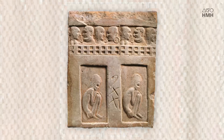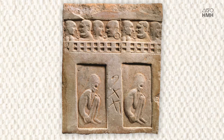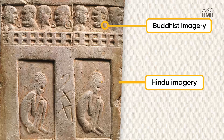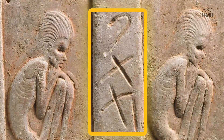Take a look at this ceramic tile. It's from a Hindu temple about 1500 years ago. The temple was originally a Buddhist shrine, which leads to an unusual pairing — there are Buddhist images along the top but Hindu images below it. But what about those marks in the middle? What are those?